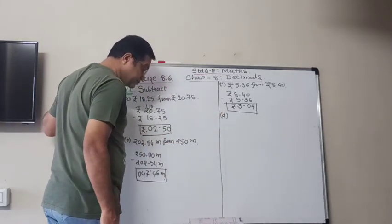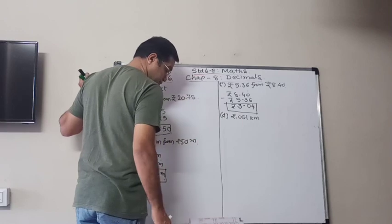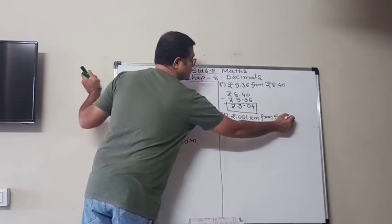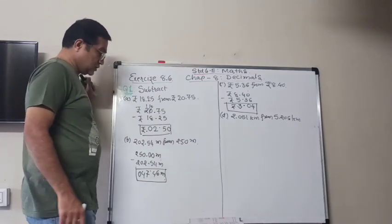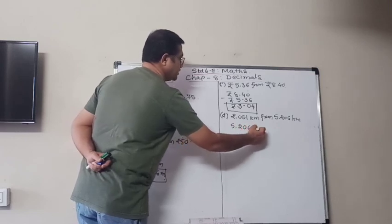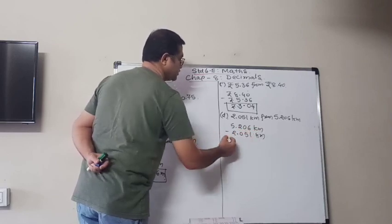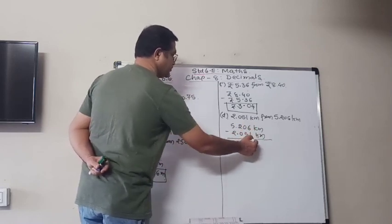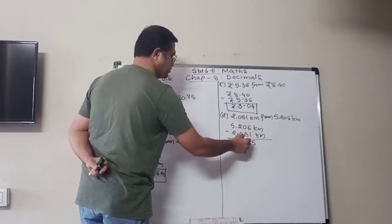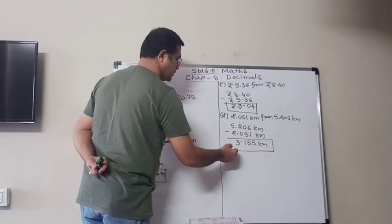D, 2.051 kilometer from 5.206 kilometer. So first we will write down that one: 5.206 kilometer minus 2.051 kilometer. 6 minus 1 is 5, 10 minus 5 is 5. Here it will be 1, 1 minus 0 is 1, and 5 minus 2 is 3. So 3.155 kilometer.